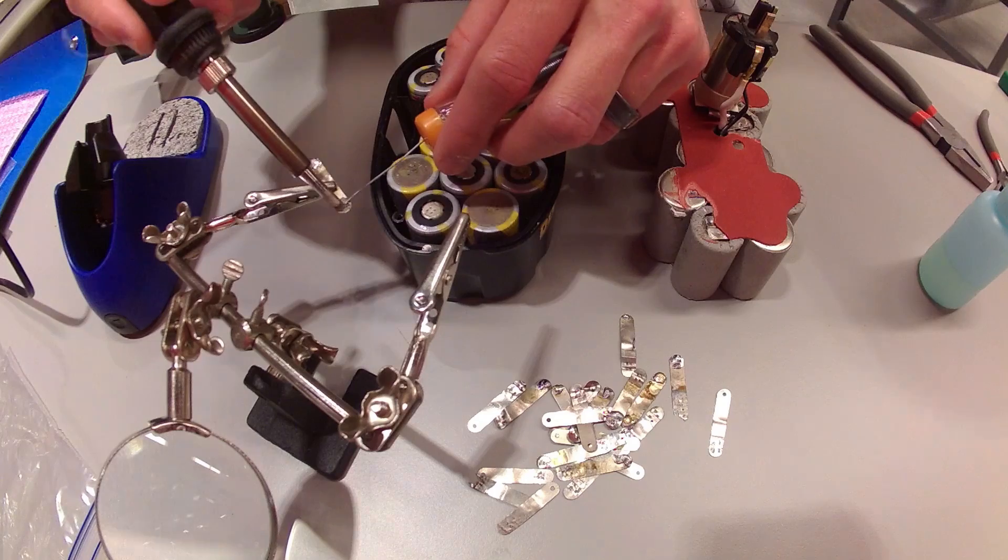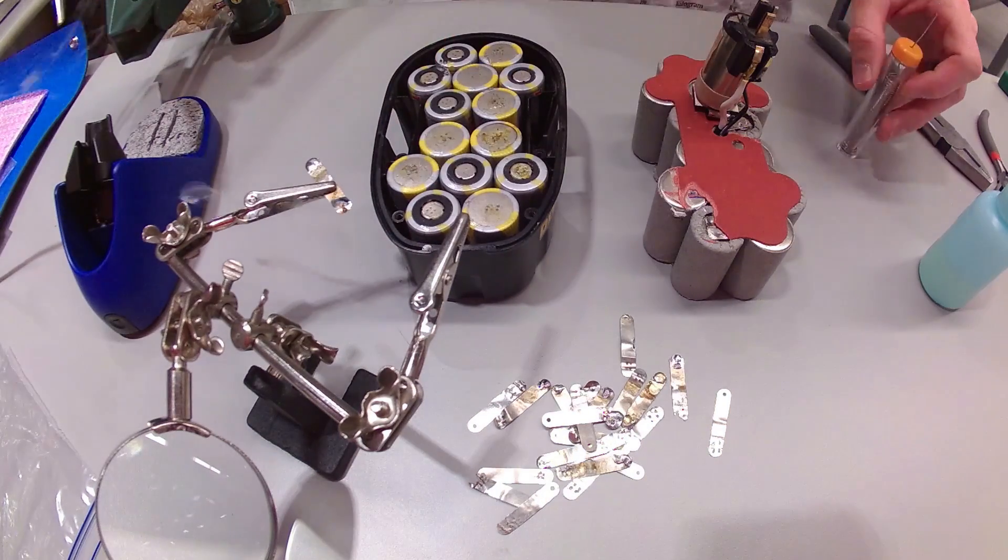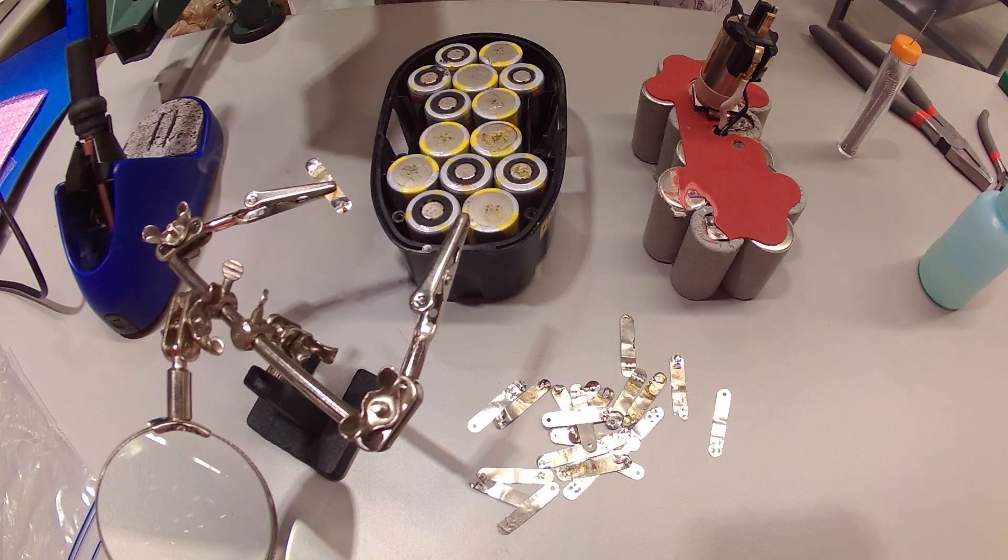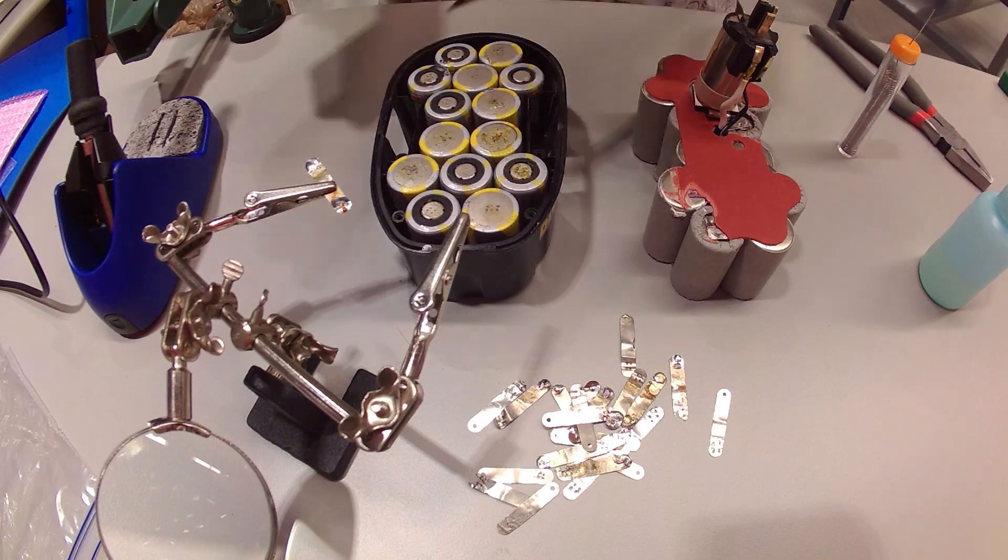Now this soldering iron I'm using here is a 60 watt. I tried it with my 30 watt and that simply didn't have enough heat. So I'm using this chisel tip here on the 60 watt and it works great.